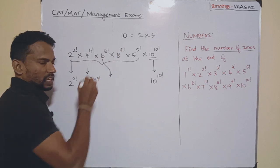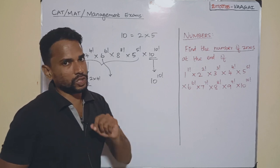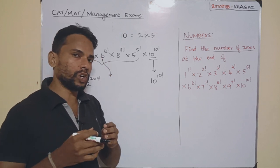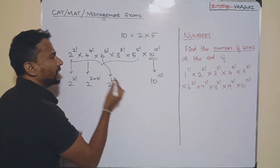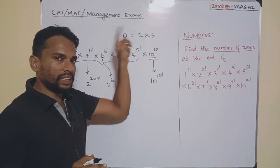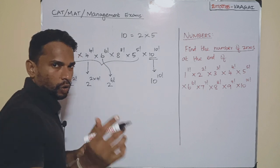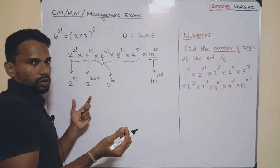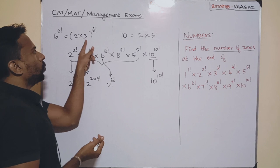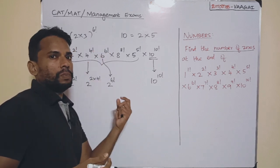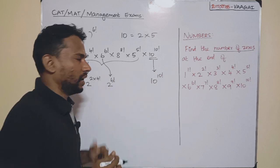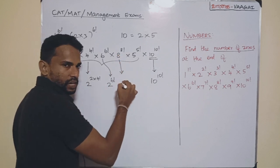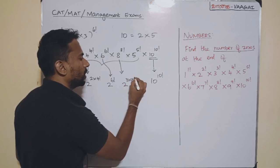For 6^(6!): since 6 = 2 × 3, we focus only on the 2 part, taking 2^(6!) and discarding 3^(6!) since 3 contributes nothing to the number of zeros. For 8^(8!): since 8 = 2³, this becomes (2³)^(8!) = 2^(3 × 8!). So from these even-number terms we have collected all their contributions as powers of 2.